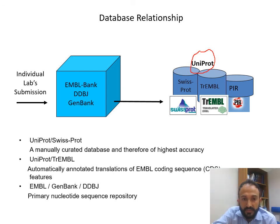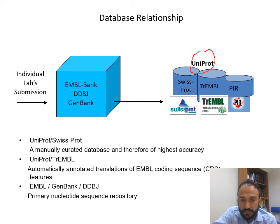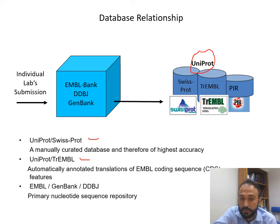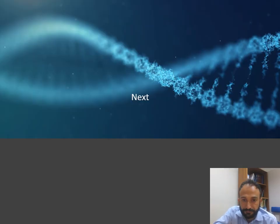To summarize: UniProt contains all the information from SwissProt, TrEMBL, and PIR. UniProt/SwissProt is the manually curated database of highest accuracy. UniProt/TrEMBL is the automatically annotated translation of EMBL coding sequences — fast and containing a lot of information not manually curated. EMBL, GenBank, and DDBJ are the primary nucleotide sequence repositories.